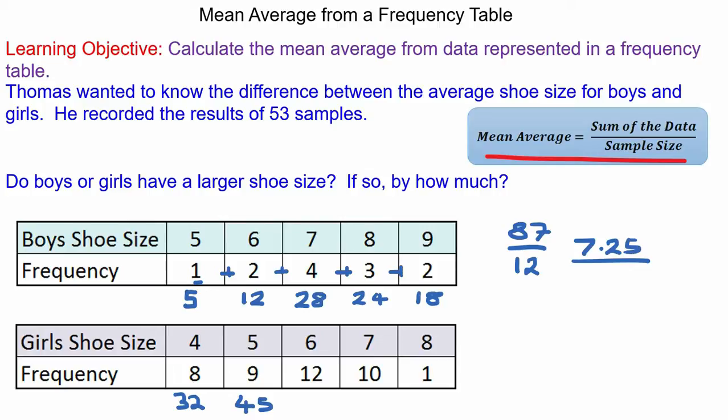Twelve girls have a shoe size of six, seventy-two. Ten girls have a shoe size of seven and one girl has a shoe size of eight which is eight.